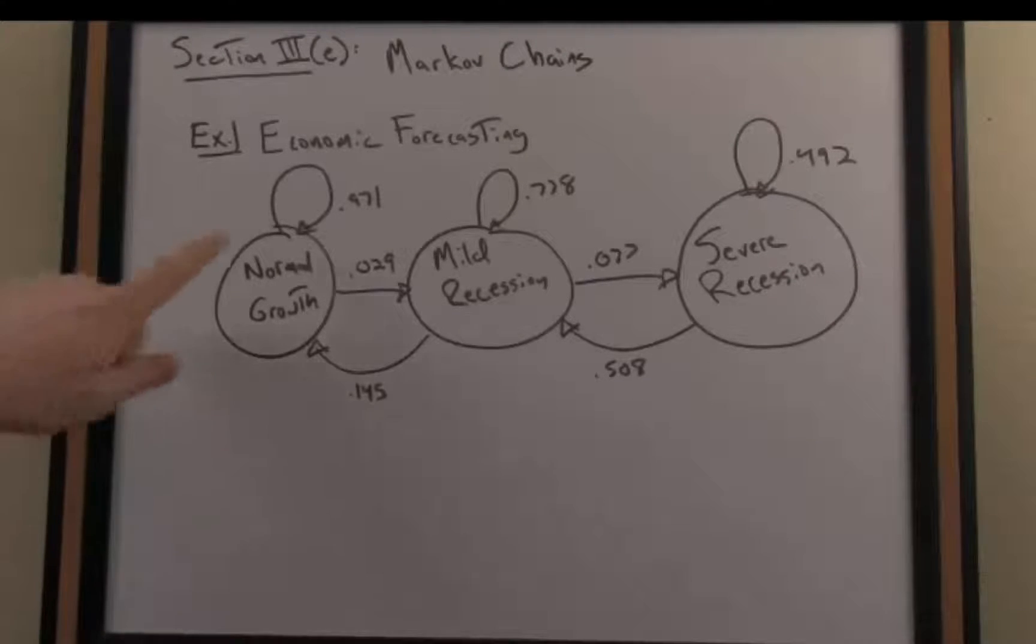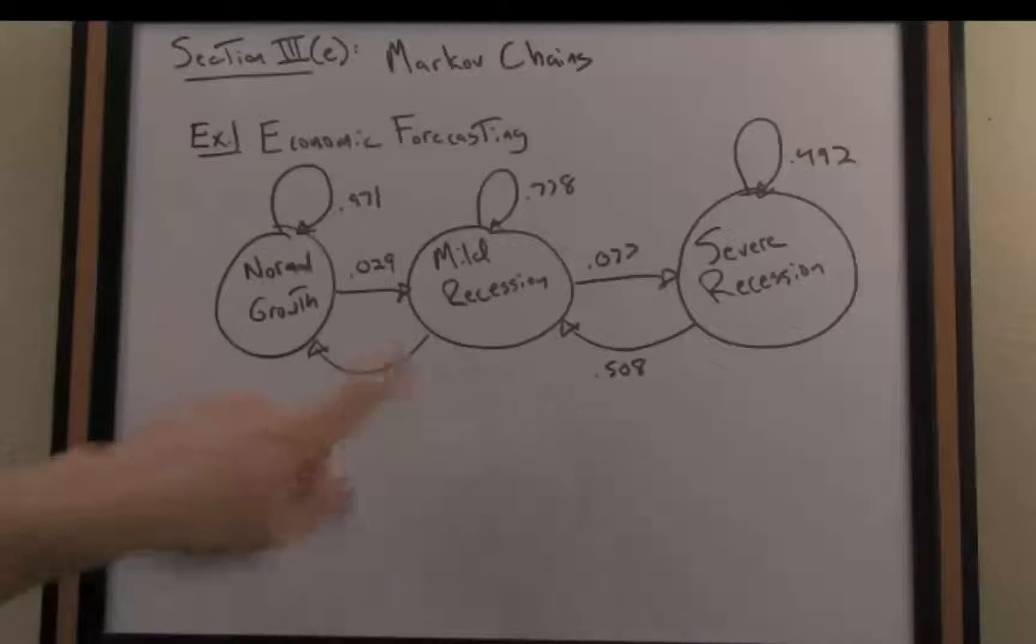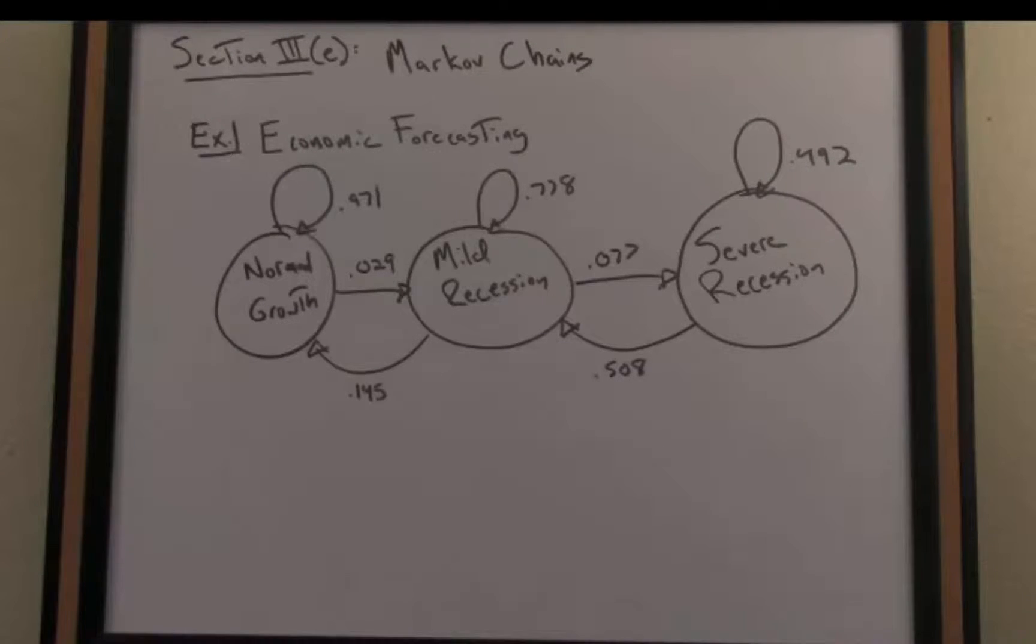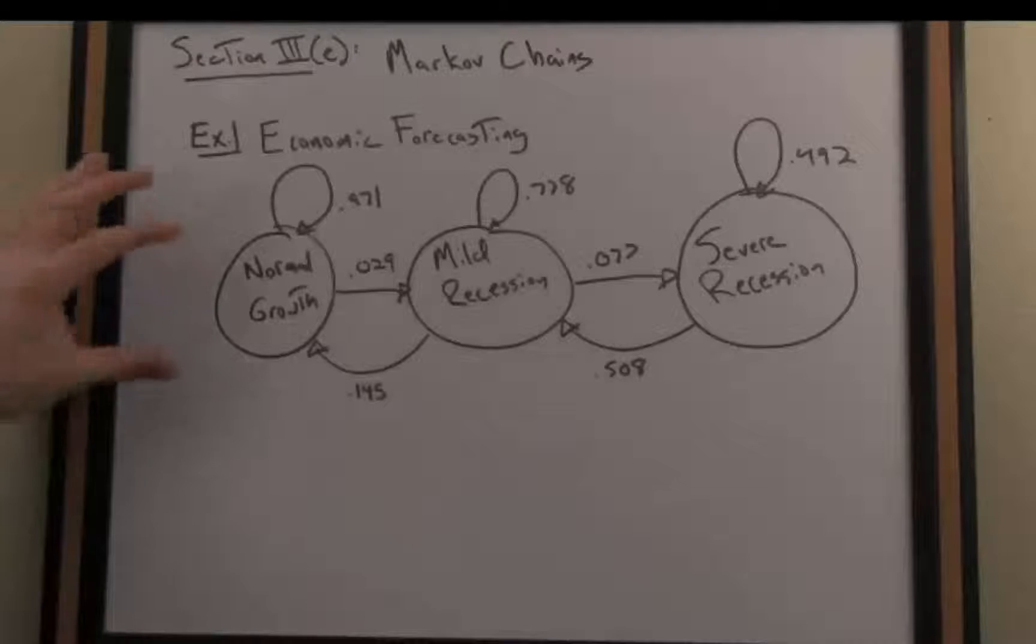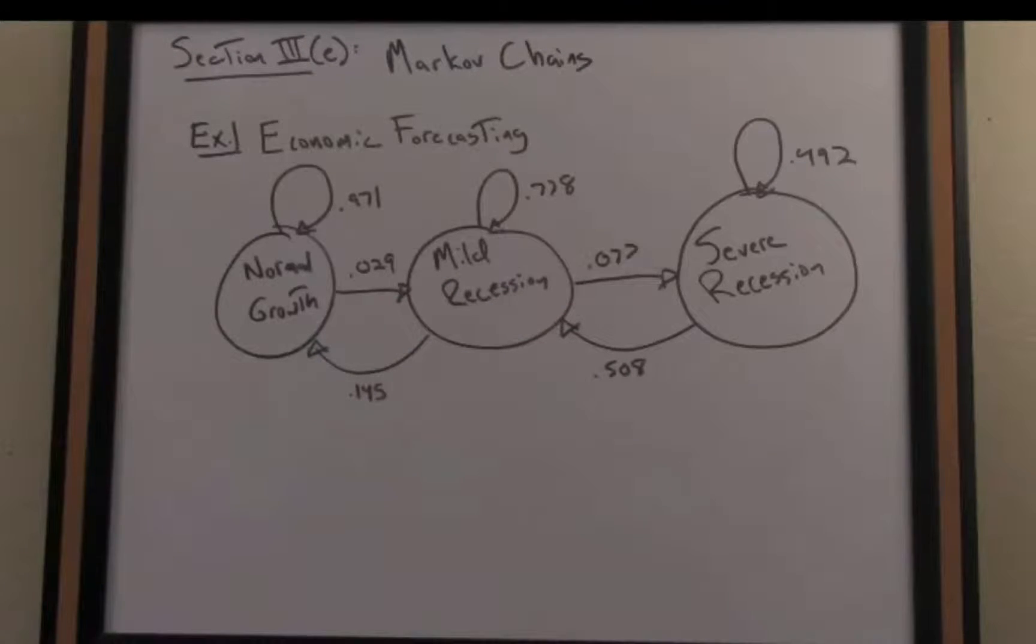So you'll notice in a directed graph there are arrows pointing from one state or one outcome to another. For instance we have the outcome of our economy as experiencing normal growth, mild recession, or severe recession.